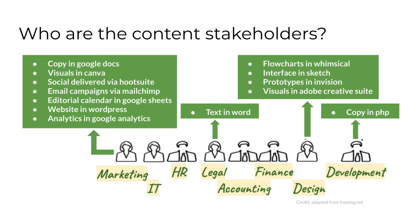The first task in planning a content strategy development project is to determine who the content stakeholders actually are. As discussed in the Module 1 lecture, in the vast majority of businesses there's no centralized job role or individual who manages all of a business's content. Rather, it's a content ecosystem made up of many employees within different business units. The book Enterprise Content Strategy includes a table with 15 different potential business units listed as content stakeholders and possibly members of the content strategy development team.